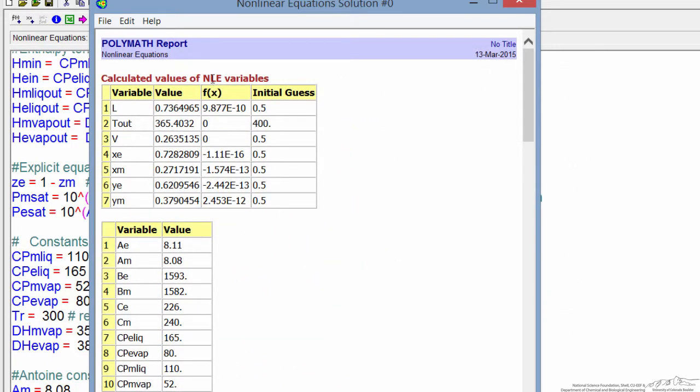So the solution is very quick. We can then now very easily change the outlet pressure, change the inlet composition or temperature and calculate new values.